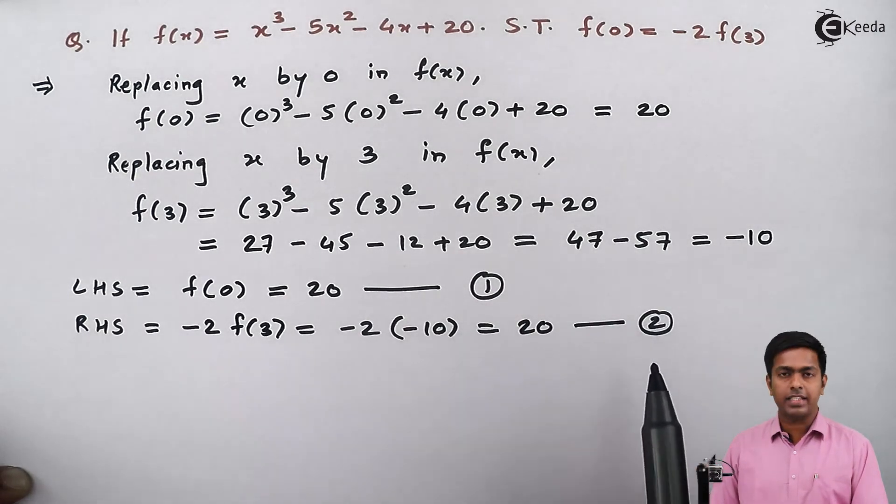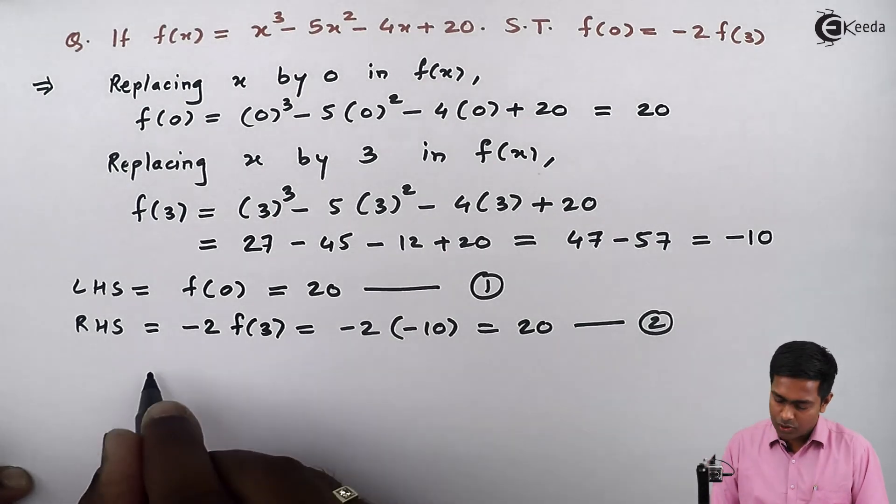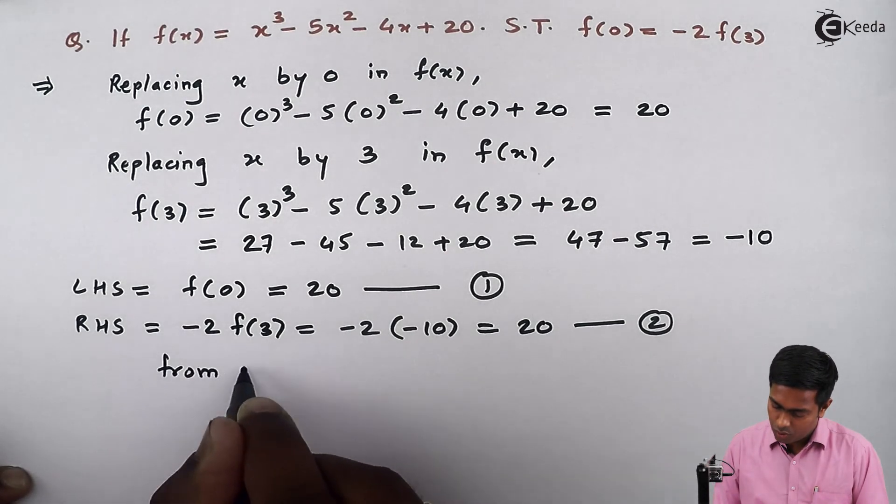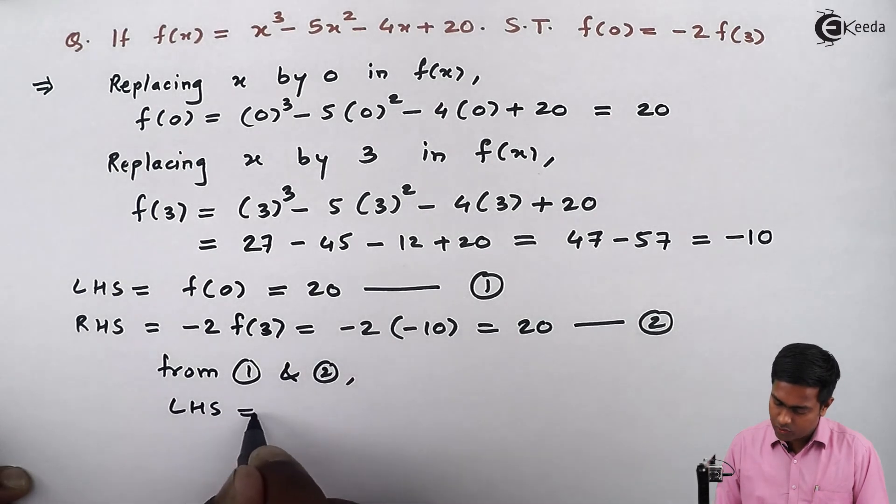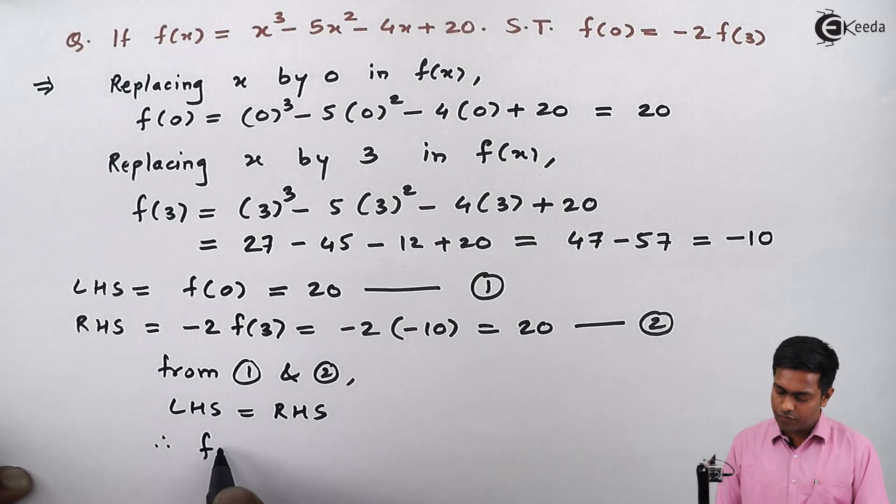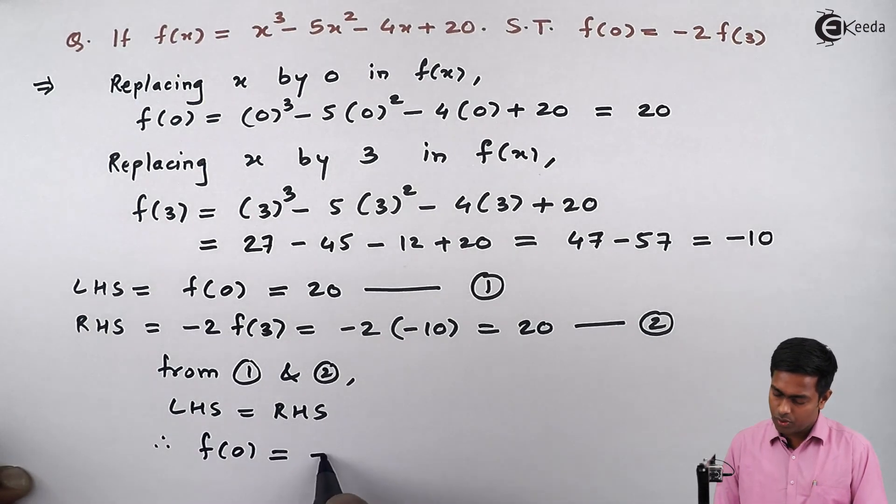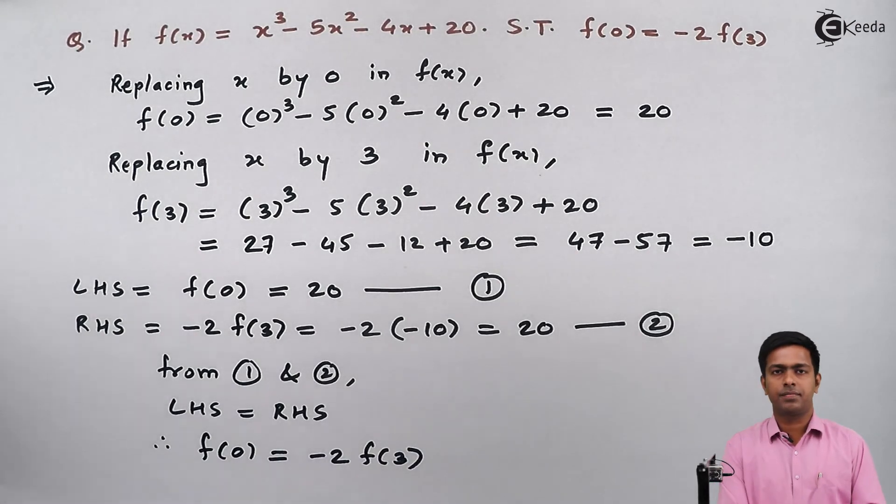Now from 1 and 2 we can say that LHS is equal to RHS, and therefore f(0) = -2f(3) and we prove the result. Thank you.